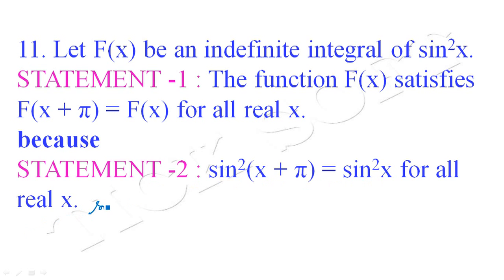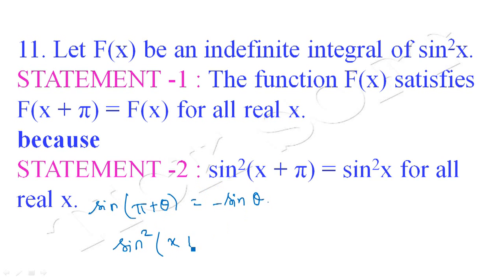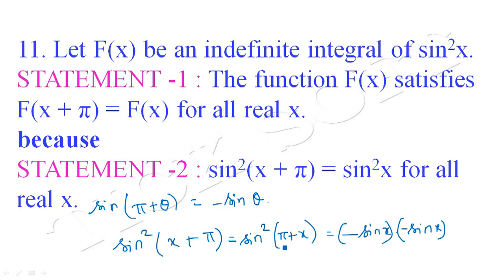We know that sin(π + θ) = −sin θ. So sin²(x + π) can be written as sin(π + x) · sin(π + x), which equals (−sin x)(−sin x) = sin²x. Therefore sin²(x + π) = sin²x for all real x.